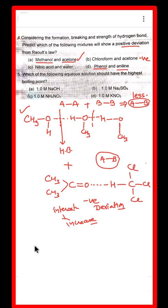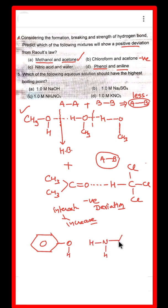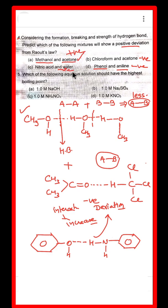Phenol has an -OH group and aniline has an -NH2 group attached to benzene. When phenol and aniline are mixed, hydrogen bonding interactions increase — so this also shows negative deviation. Nitric acid similarly shows negative deviation. Only methanol and acetone gives positive deviation, confirming the first option is the answer.